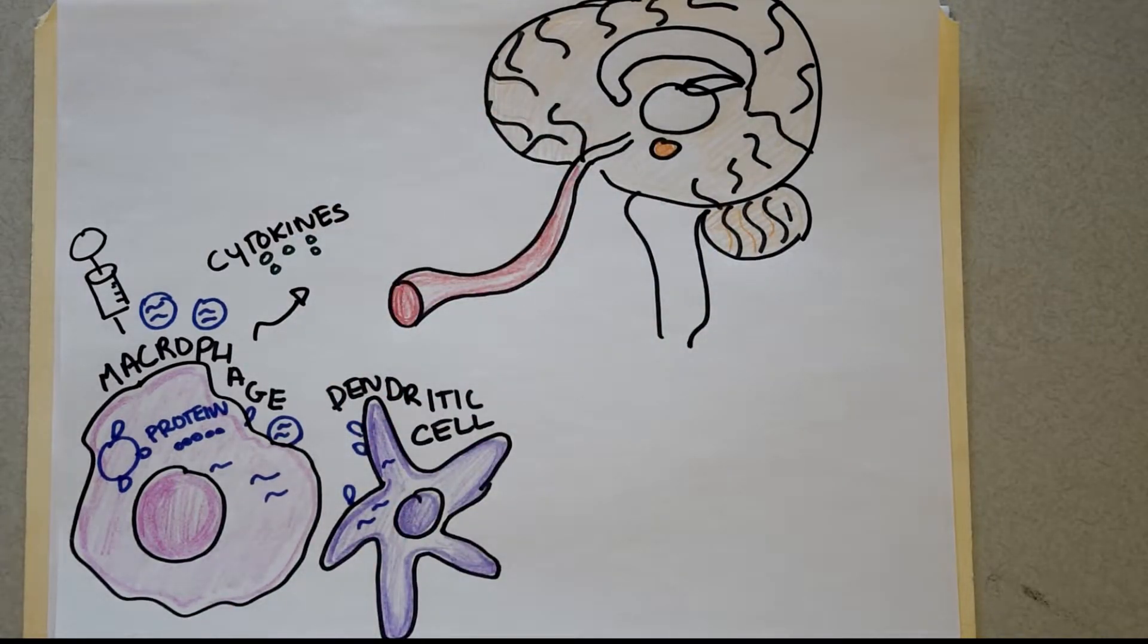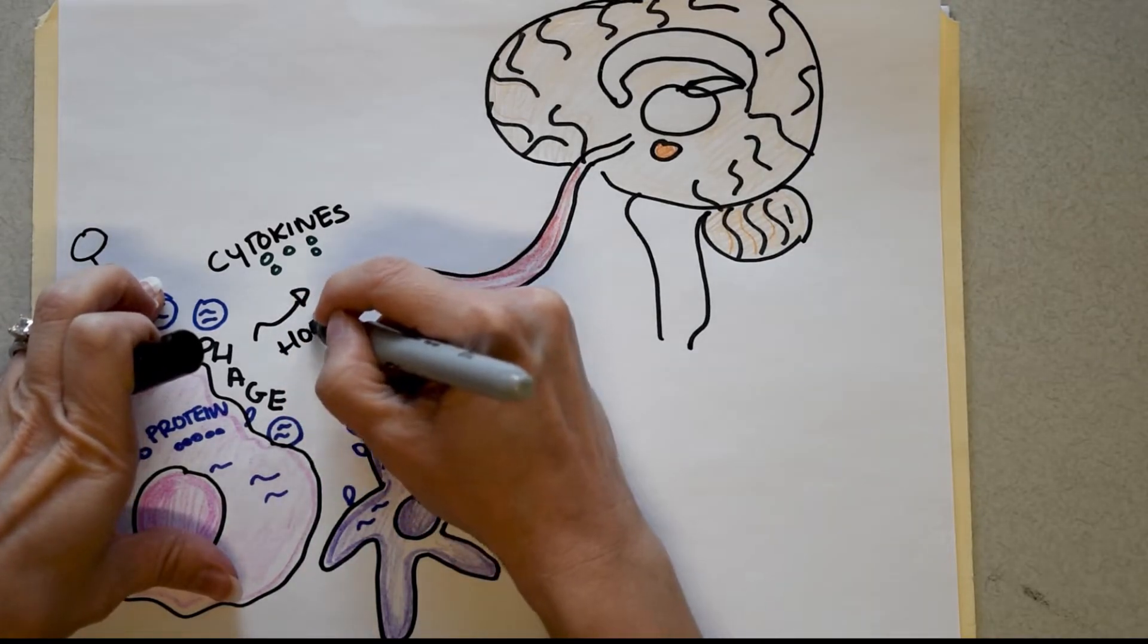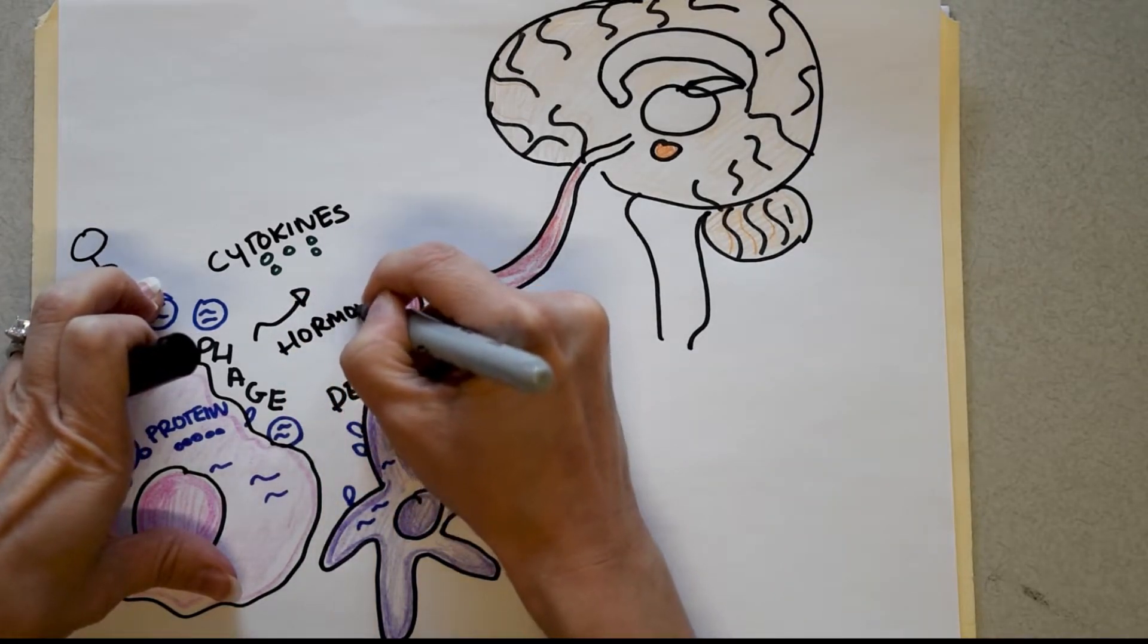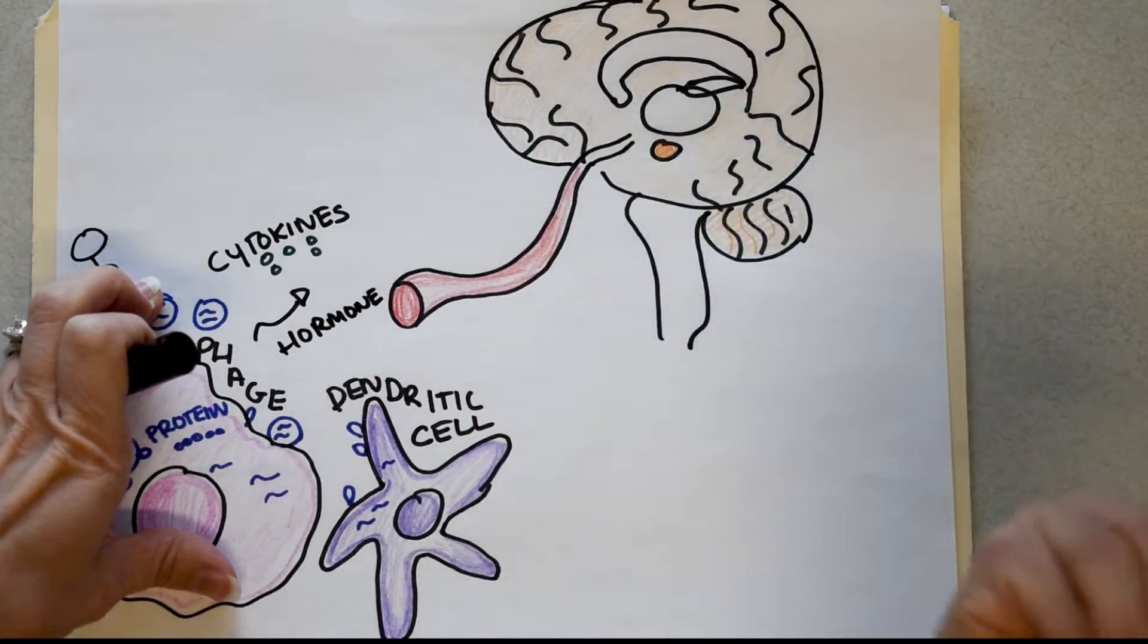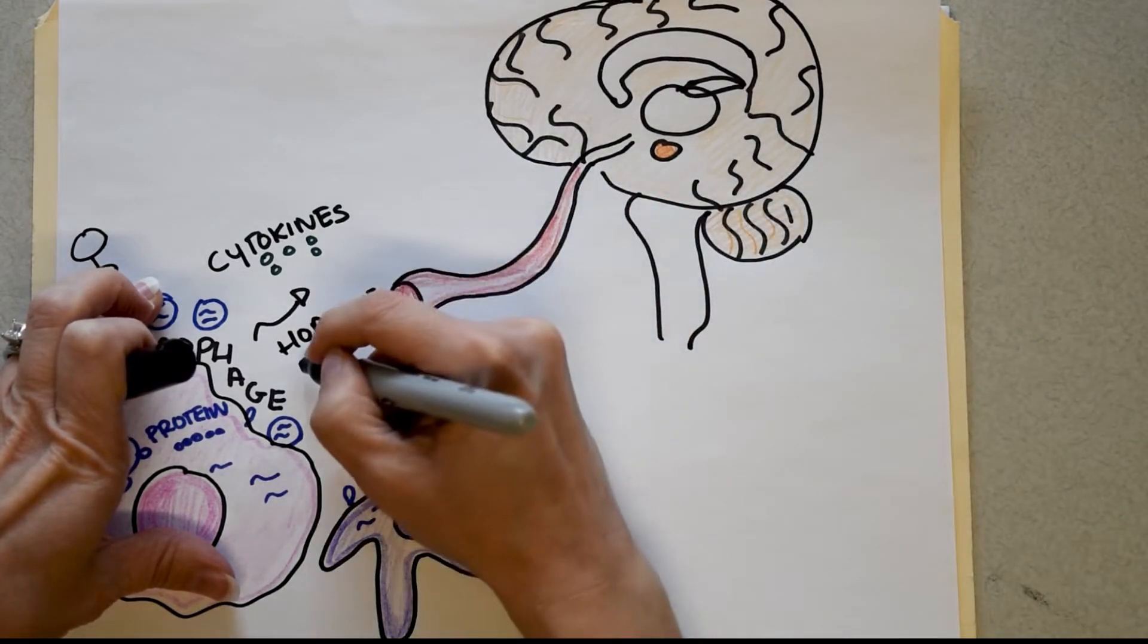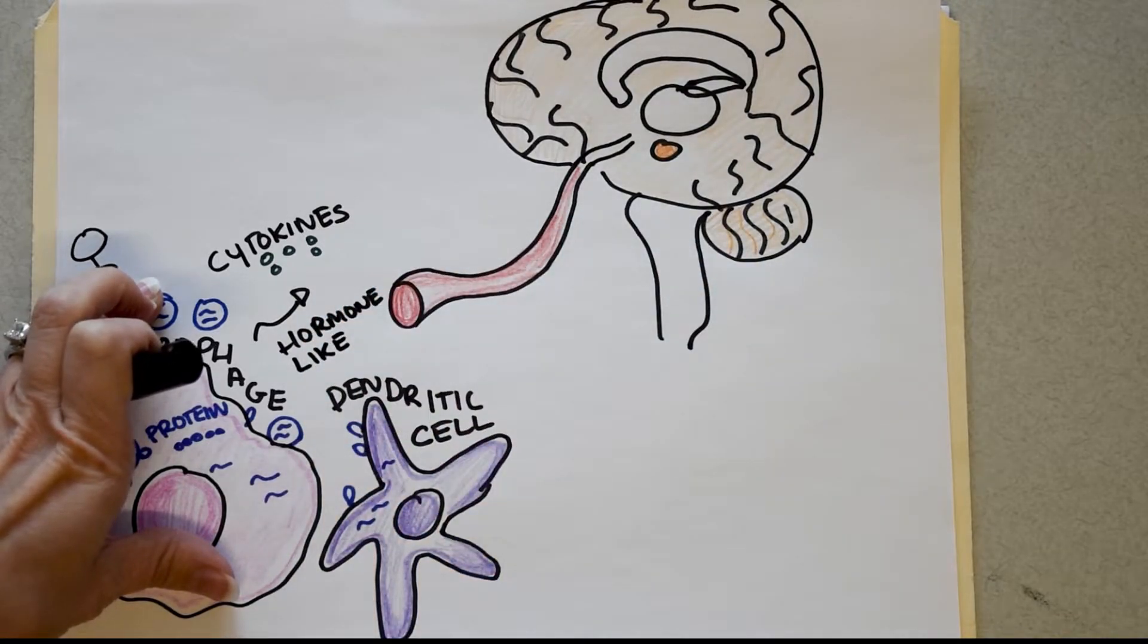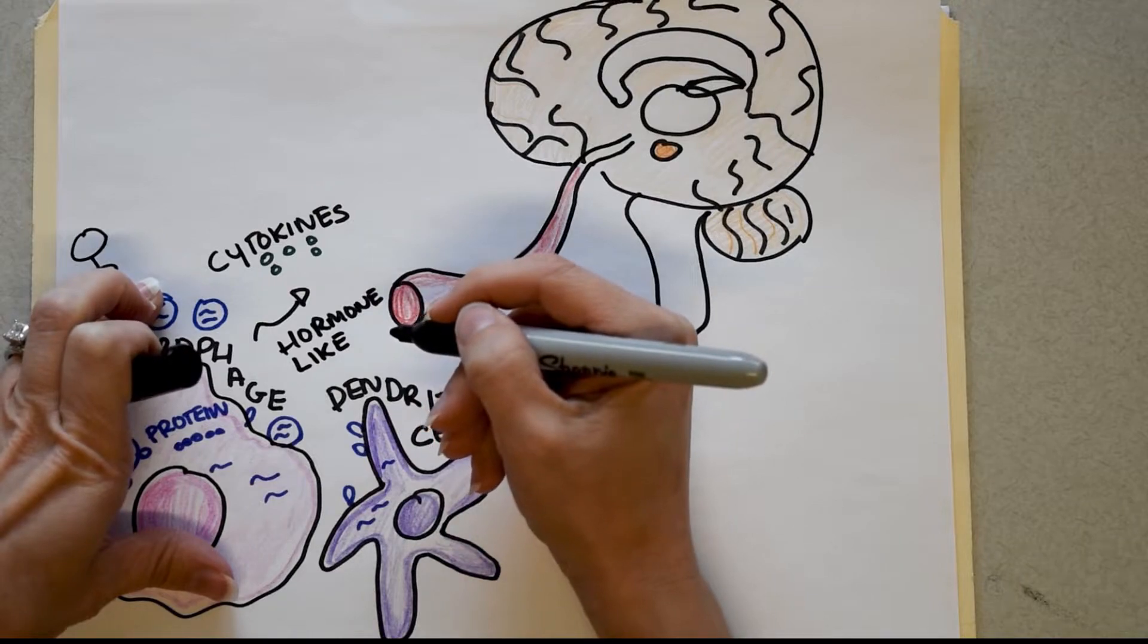They'll also make hormone-like molecules. Now why would you want to make a hormone-like molecule? Because hormones can cross through all kinds of different barriers and hormones can travel through your bloodstream long distances.